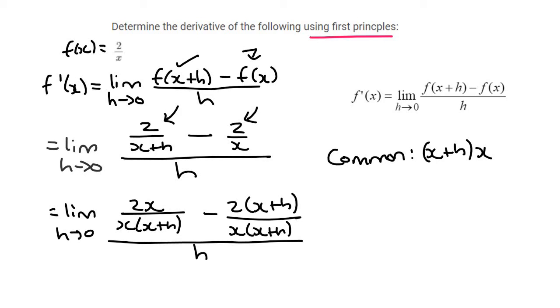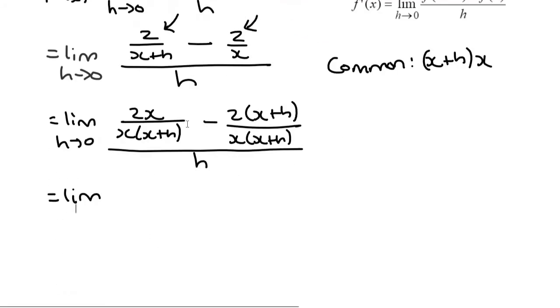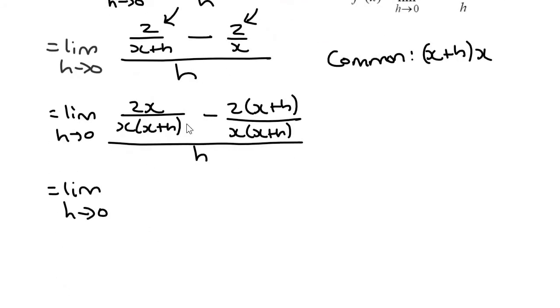Now what we can do, if we look over here at the top, the denominators are now the same. And so we can simply combine. And so that's going to give us, we must say limit as h goes to zero. And then we can say 2x minus 2x plus h over x, x plus h. And that is all over h.